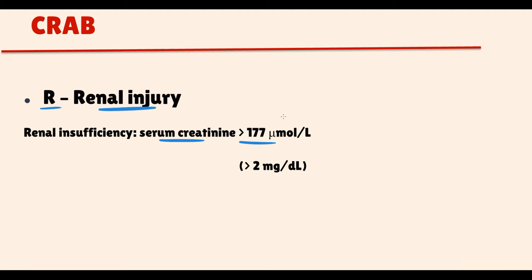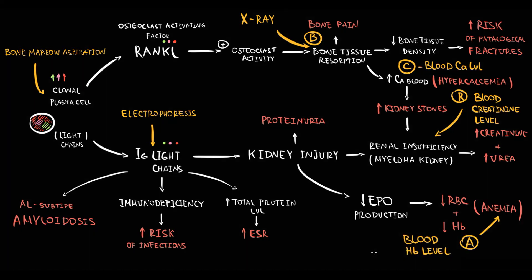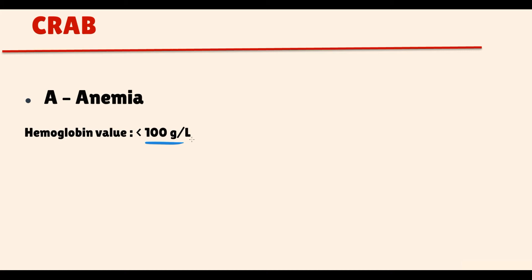Kidney injury causes decreased erythropoietin production, which in turn leads to anemia. A hemoglobin level less than 100 g/L fulfills the A criteria.